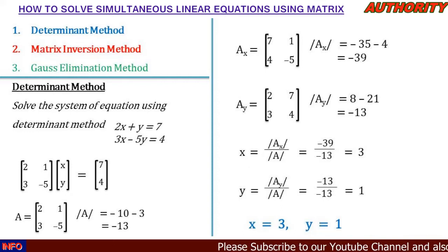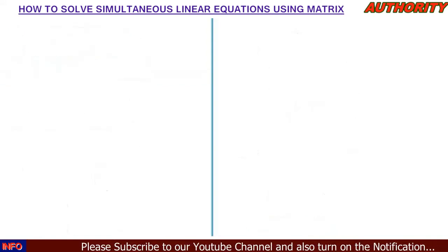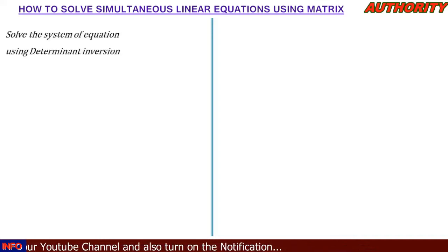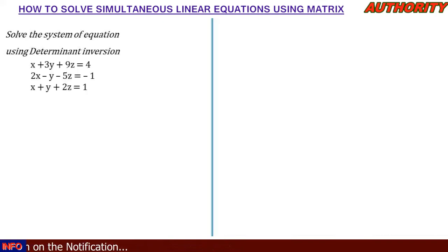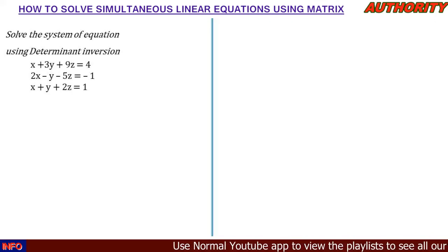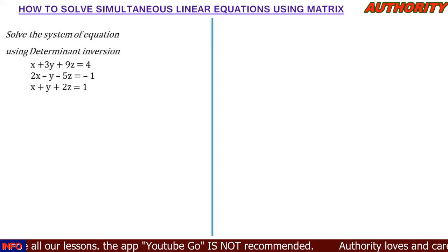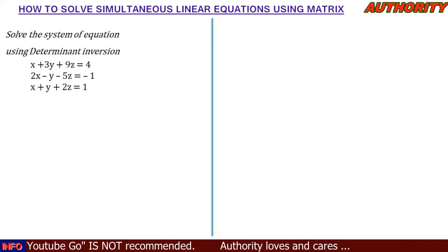Now let's take a 3x3 example — three equations and three unknowns. Question two: solve the following system using the determinant method. First equation: x + 3y + 9z = 4. Second equation: 2x - y - 5z = -1. Third equation: x + y + 2z = 1. We need to find the values of x, y, and z.